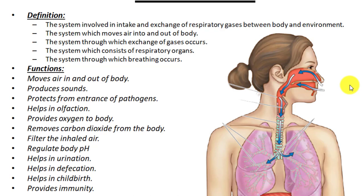The third function: it protects against the entrance of pathogens. In our nose we have mucus membranes and hairs; in the larynx and trachea we have mucus membranes and important microorganisms that help maintain the health of the respiratory system and prevent entrance of pathogens. The nasal hairs and mucus membranes in our nose prevent the entry of pathogens.